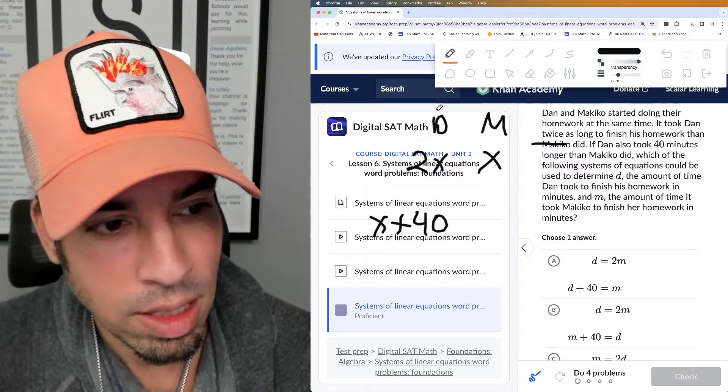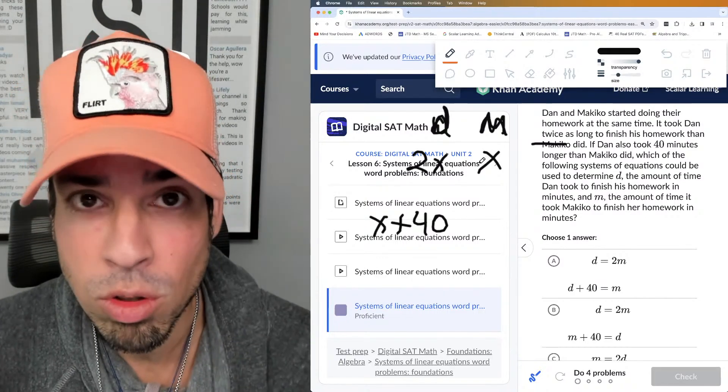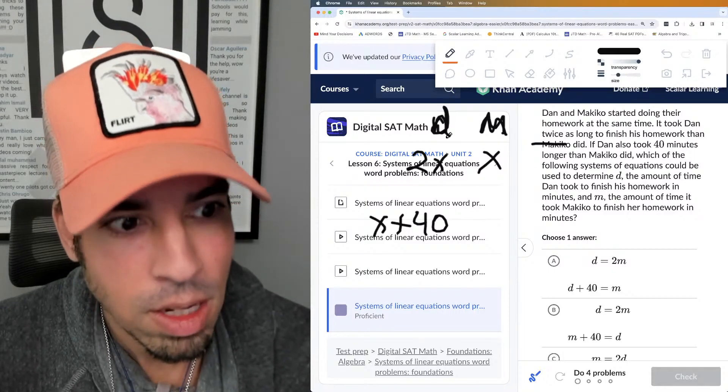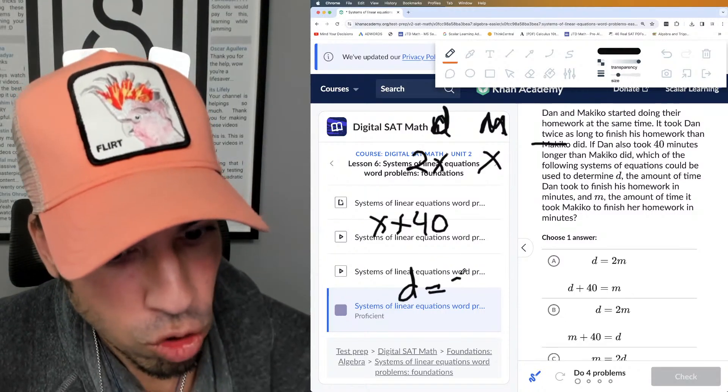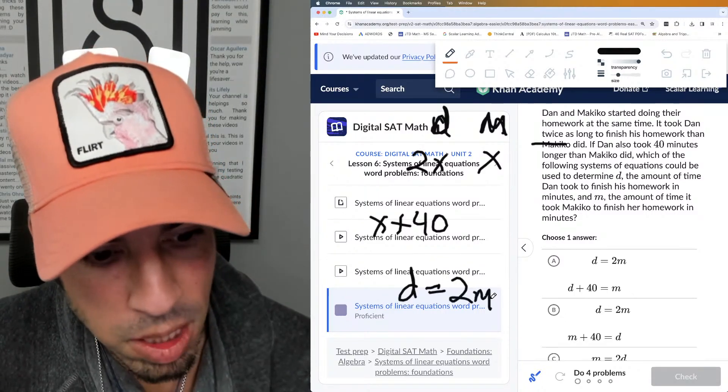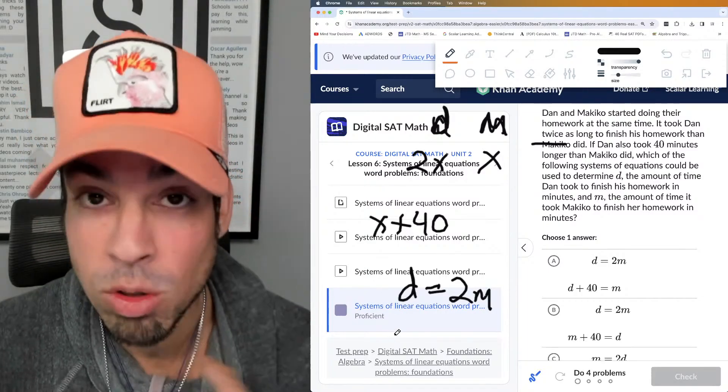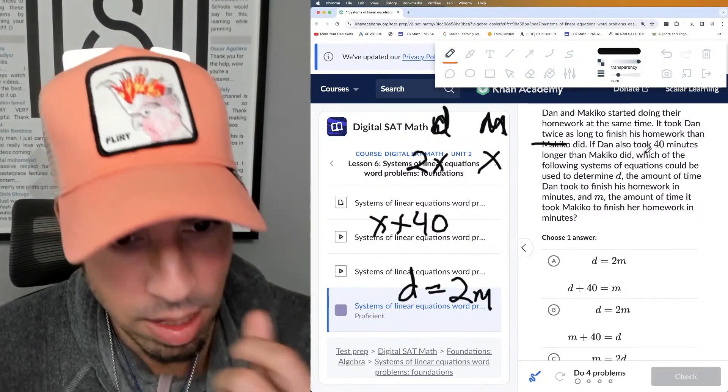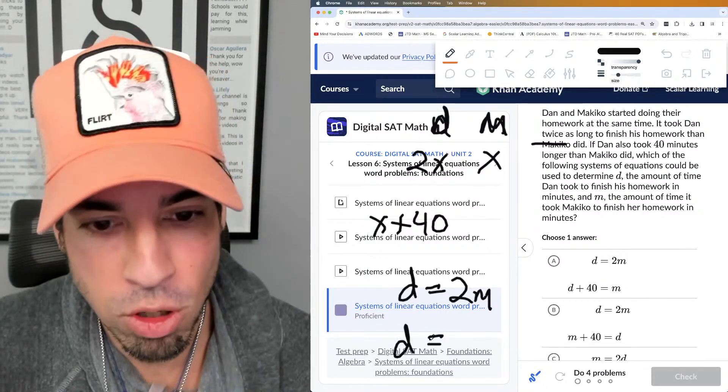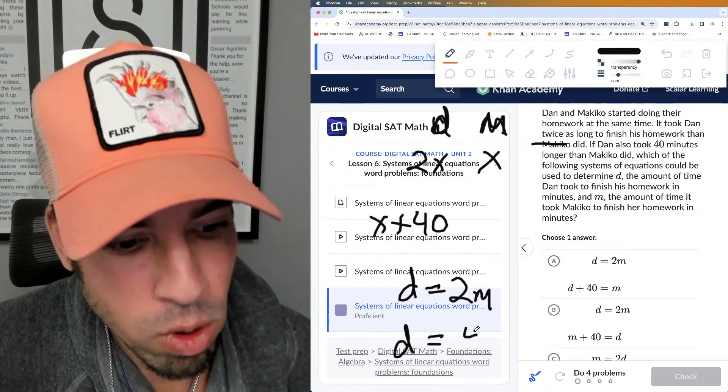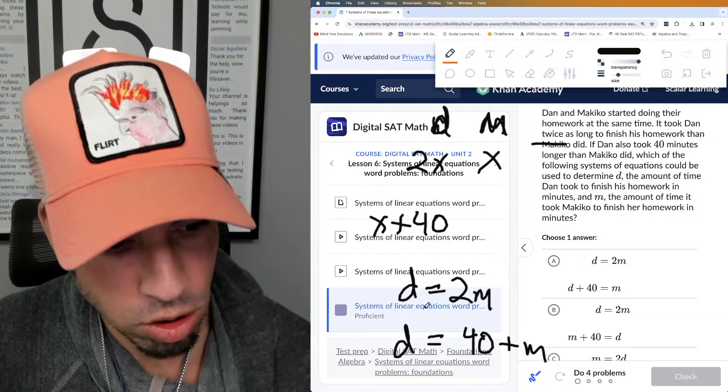All right, so this is actually a two-variable system. So even though I created this, I can still use it. But if we've got d and we've got m and we're trying to create a system of equations, we're trying to use those two relationships. The first thing is it says that Dan took twice as long as Makiko. So if Makiko did 10, Dan would be 20; 20, Dan would be 40. So I'm piecing it together like that. I'm reading it as an into an equation.